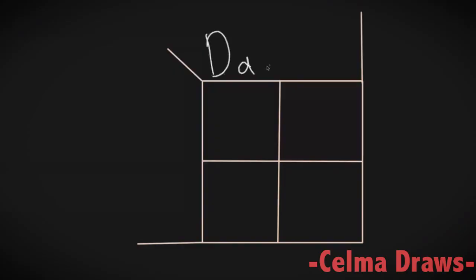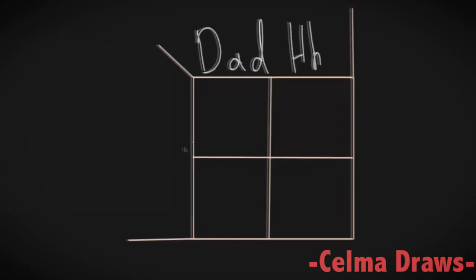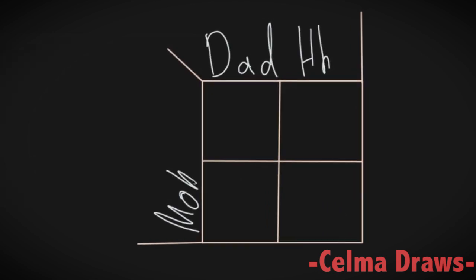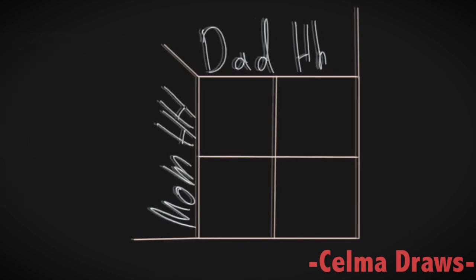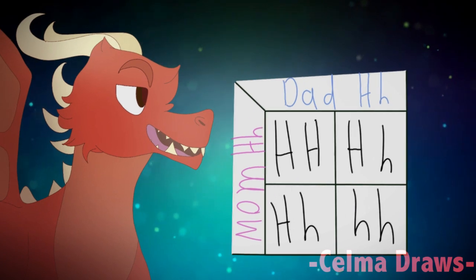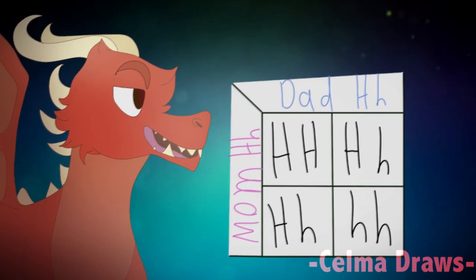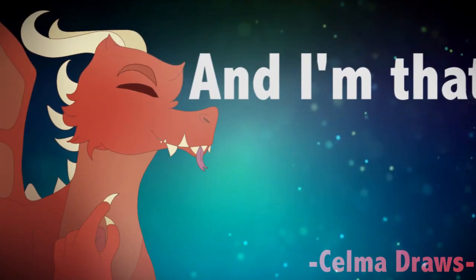Let's say that the dad has the genes capital H and lowercase h — long horns and short horns — and mom has capital H and capital H — short horns and short horns. Since the dominant gene is shown in all squares, the child has a 100% chance of having short horns. And I'm that child.